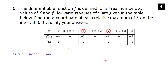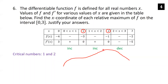The function is increasing from 0 to 1 and from 1 to 2 because f′ is positive, and decreasing from 2 to 3 because f′ is negative. At x=1, the derivative is zero but f continues to increase — so there's no maximum there. At x=2, f increases then decreases, so x=2 is the only relative maximum.